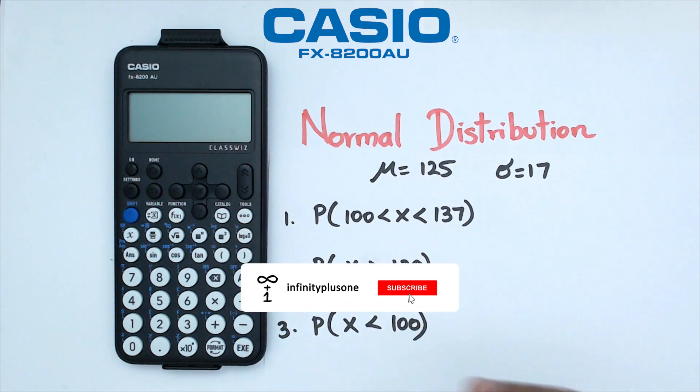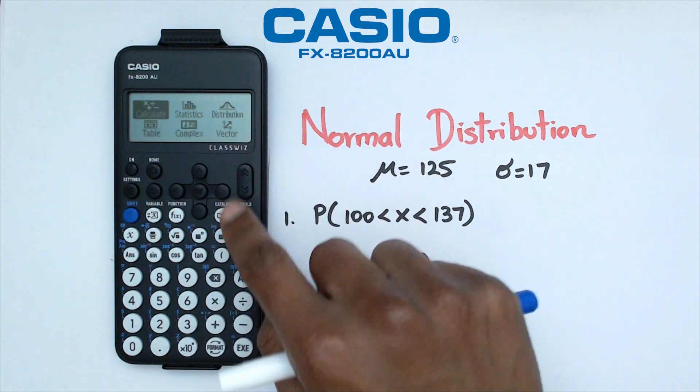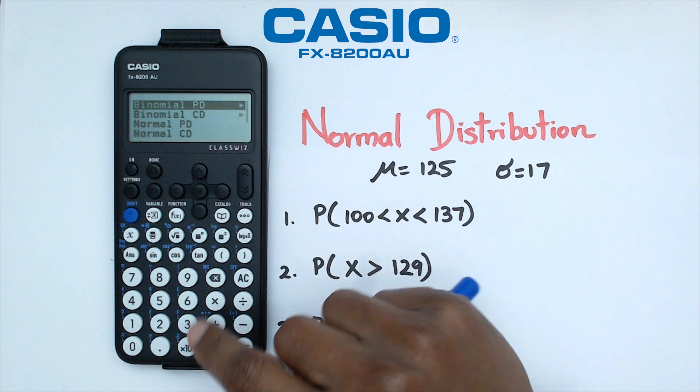Okay, so the first thing we're going to do is switch on the calculator, go into the home menu, and navigate our way towards Distribution. Once we get to Distribution, we're going to go down to Normal CD, which is the cumulative distribution.